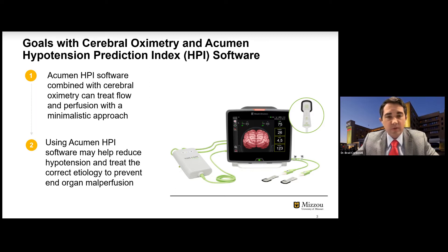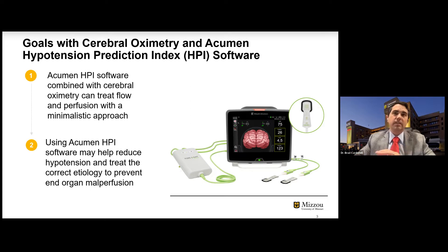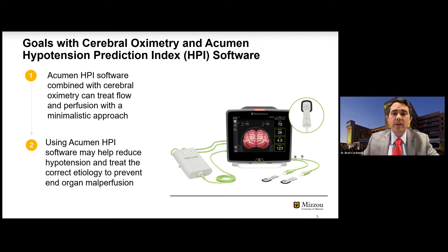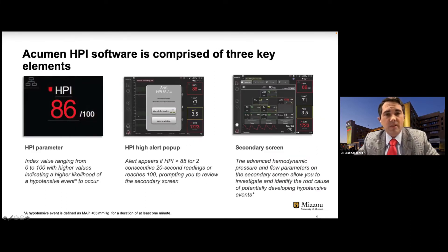Not only do we want to prevent hypotension, but we want to actually treat the right cause and etiology of the hypotension. We've all seen examples in the OR where someone has just treated the pressure with something to artificially increase it, compromising flow and perfusion out of habit — 'I always use phenylephrine, pressure is just fine, doc.' I think we need to get at the root cause, get objective data to treat that root cause, and that's what I've used this software for.